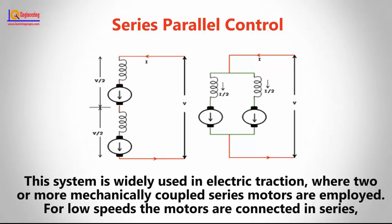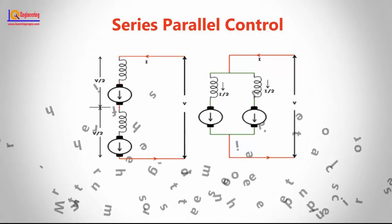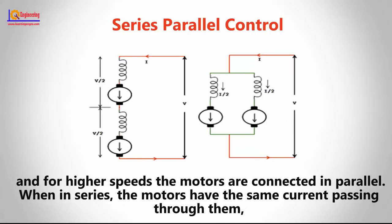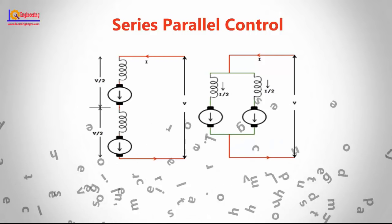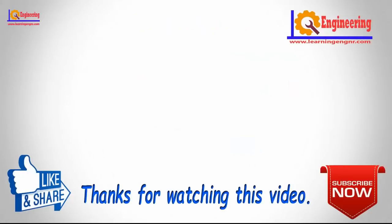The series-parallel control system is widely used in electric traction where two or more mechanically coupled series motors are employed. For low speed, the motors are connected in series, and for higher speed the motors are connected in parallel. When in series, the motors have the same current passing through them although the voltage across each motor is divided. When in parallel, the voltage across each motor is the same although the current gets divided.